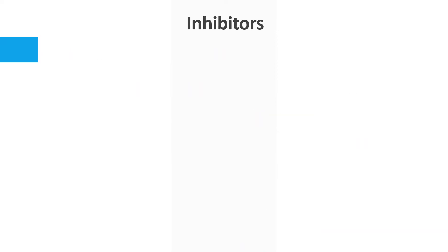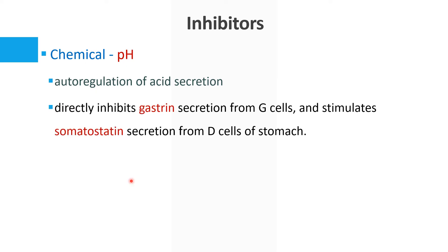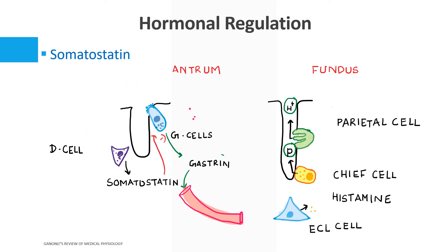The main inhibitor of gastric acid secretion is pH — this is called the autoregulation of acid secretion. If the pH falls below 3, the stomach automatically decreases acid secretion. The mechanism directly inhibits gastrin secretion from G cells and also stimulates somatostatin secretion from D cells, switching off gastrin and activating the inhibitor somatostatin.